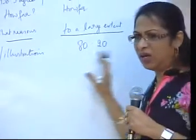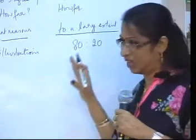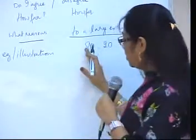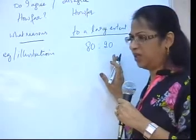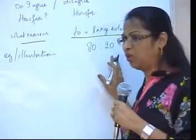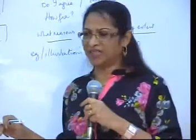So 80 to 20 would be your agreement and disagreement. If you disagree to a large extent, then your disagreement will be 80 and your agreement would be 20. Based on that, I told you how to construct and format your essay.